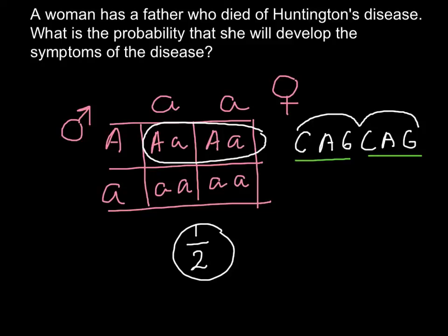Huntington's is not the only disease caused by trinucleotide repetition — there are a number of other diseases, for example Fragile X chromosome syndrome. That's all for today, thank you for your attention. Please subscribe to my new videos that I post almost every day. Goodbye.